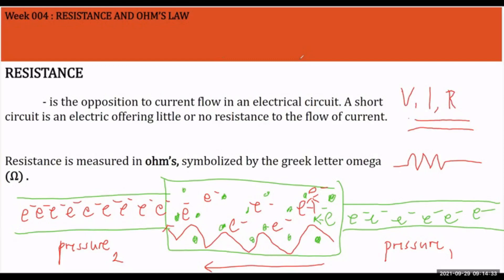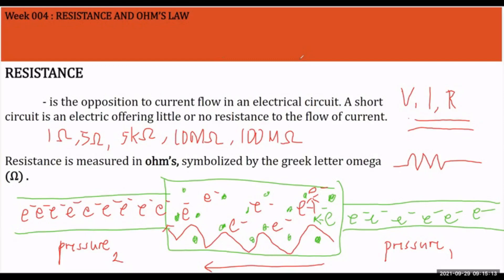There is a variance among the three fundamental quantities of Ohm's Law: voltage, current, and resistance. All three are affected when one value changes. That is the concept of resistors. You can place resistors of different values — from 1 ohm, 5 ohms, up to 5 kilohms, 10 megaohms, or even 100 megaohms. A short circuit offers little or no resistance to current flow. Resistance is measured in ohms, symbolized by omega.